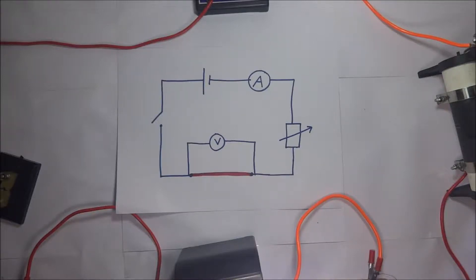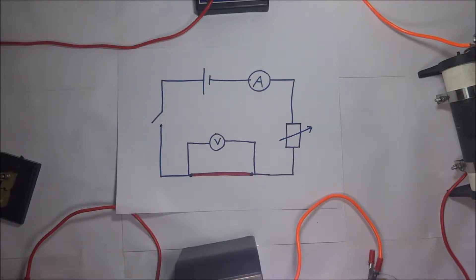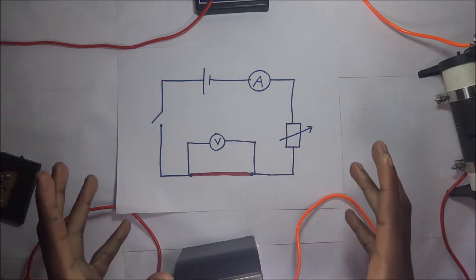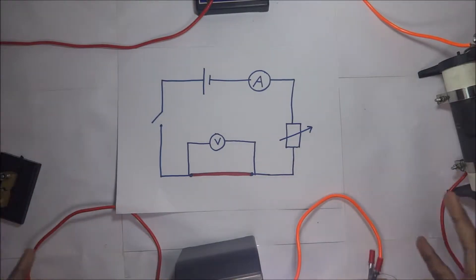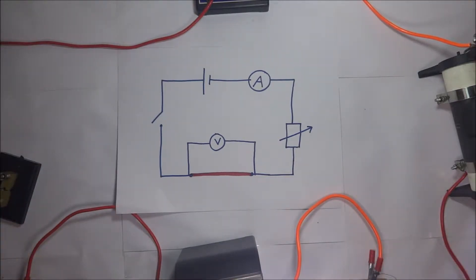In 1826, George Simon Ohm, a German physicist, carried out experiments with different metal wires. While carrying out these experiments, he discovered something that will be the basis for our discussion in this video.